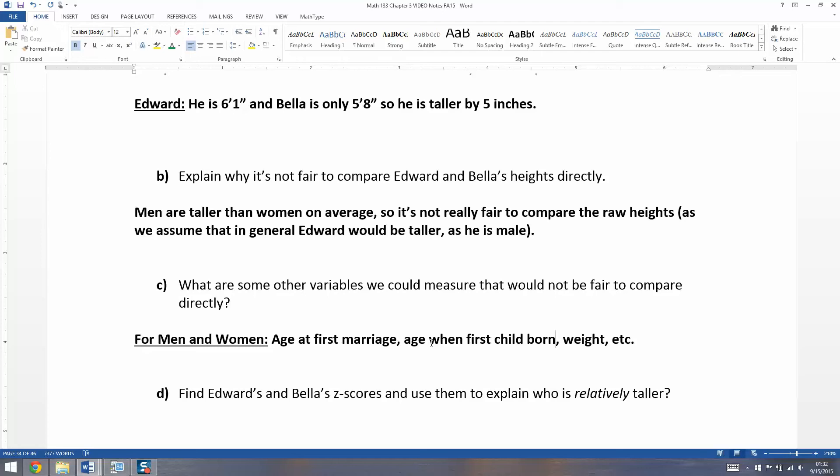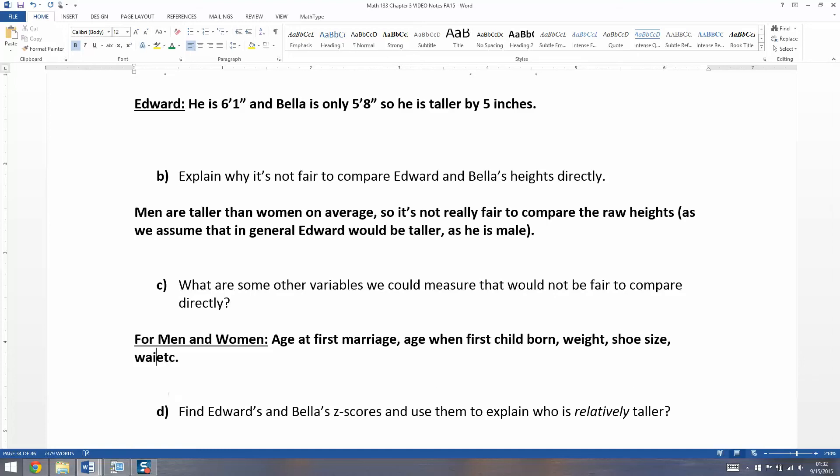What are some other variables we could measure that would not be fair to compare directly? For men and women, it's not fair to compare ages at first marriage, age when first child born, weight, shoe size, waist size. The list goes on and on. If men tend to be larger, then all those things you'd measure about them physically wouldn't necessarily be fair to compare directly, because you expect men to be bigger or older.